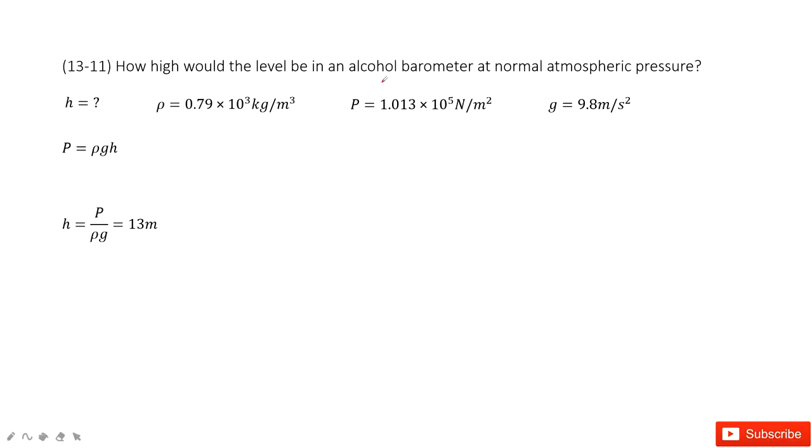So in this case, we can see for the alcohol, the density you can find in the textbook. The pressure is given, atmospheric pressure, and the g is given.